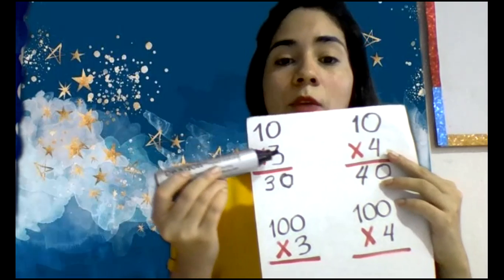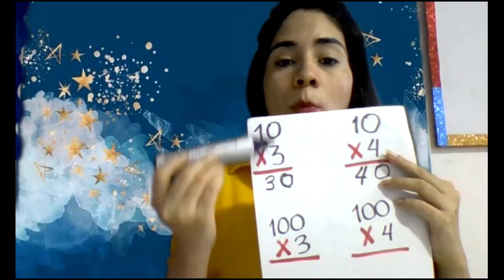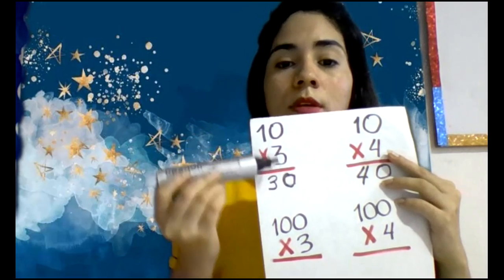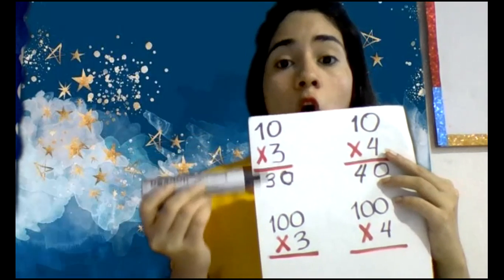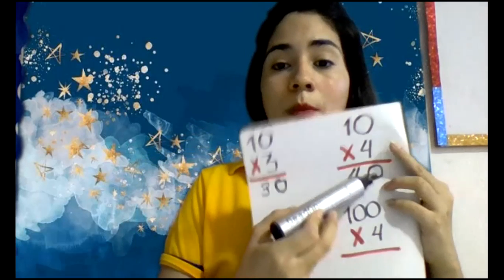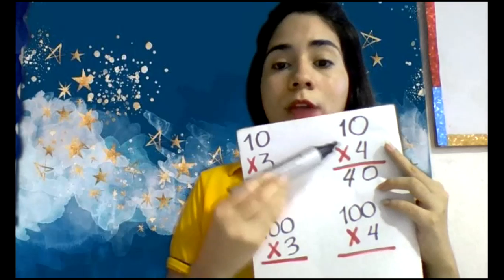¿Qué tal si hubiera un 2? 2 por cero, cero. Y 2 por 1, dos. Ahora aquí vemos el mismo ejemplo, solamente que hay un 4.